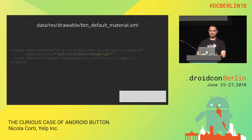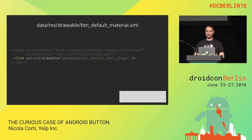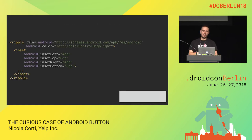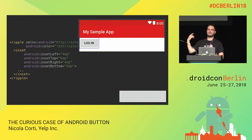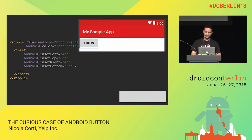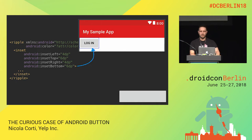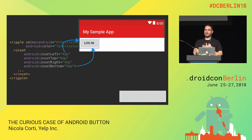The ripple requires a color. This is a theme attribute, colorControlHighlight — the color used for all your widgets whenever they're highlighted. This is responsible for the ripple effect that tends to be gray, which can change based on whether you're using the light or dark theme. This ripple is applied on top of an item called button_default_material_shape. The first thing we have is an inset — responsible for the padding around the button when you drag and drop it in Android Studio Designer. There's 6dp top and bottom, and 4dp left and right.